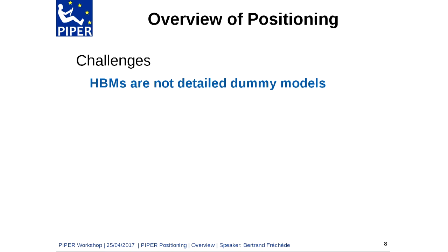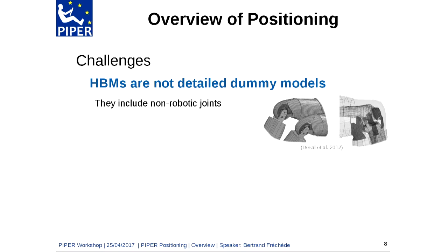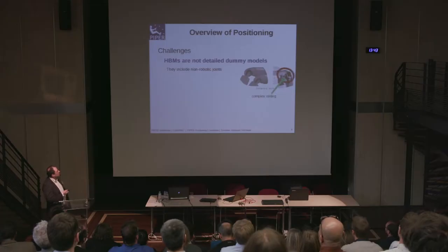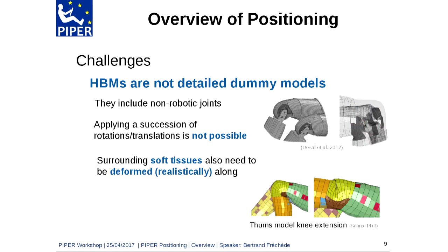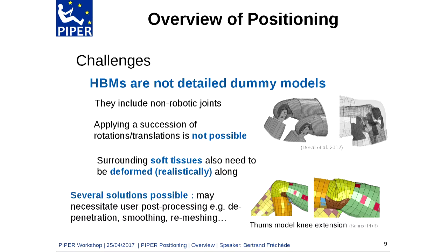The challenges are that HBMs are not detailed dummy models — they include non-robotic joints. On the left side you may see a Thor model with the knee modeled as a hinge joint, and on the right side a HBM where anatomical features are represented, meaning there is complex ligament and contact interaction. You cannot simply apply a succession of rotations and translations to move segments relative to one another, and surrounding tissues need to be deformed realistically.